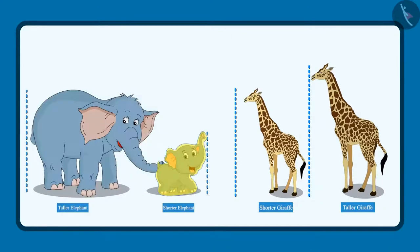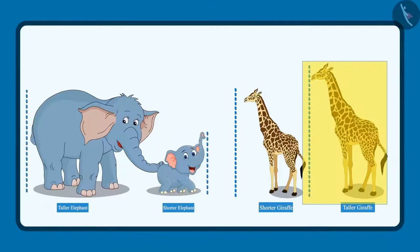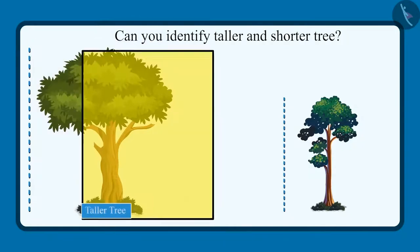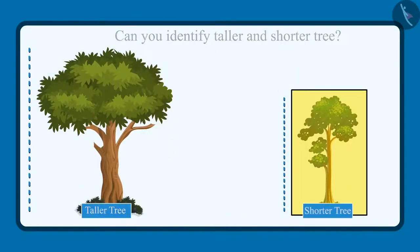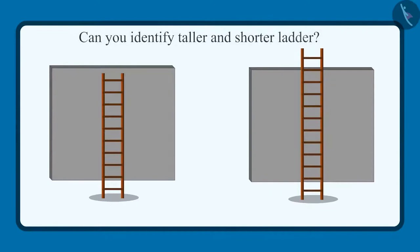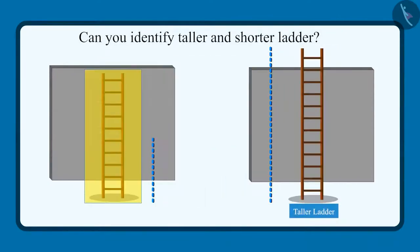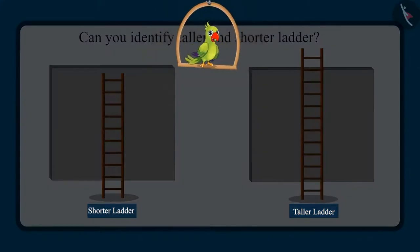So children, did you see how Chotu and Pinky identified the taller elephant, the shorter elephant, and the taller and shorter giraffe? Can you tell me which of these two trees is taller and which one is shorter? Yes, this tree is taller and this tree is shorter. And out of these two ladders, this ladder is taller and this ladder is shorter.